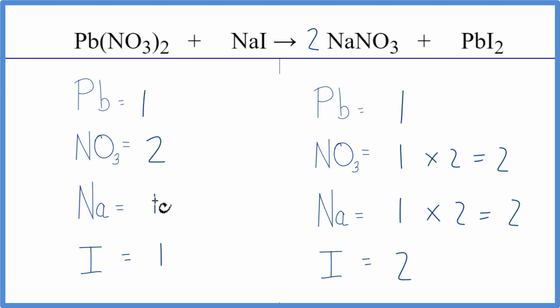We can see right now we have one sodium here, two here, one iodine here, two here. A coefficient of two in front of the sodium iodide NaI gives us one times two for sodium, which is two, and one times two for iodine, which is two. We're done, this equation is balanced.